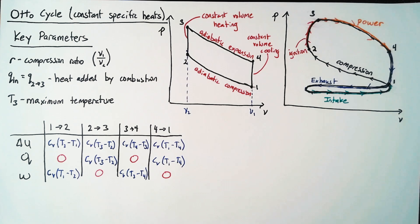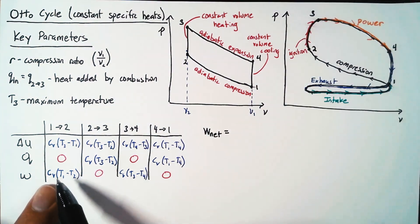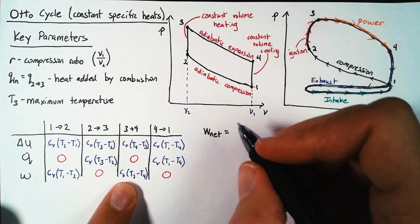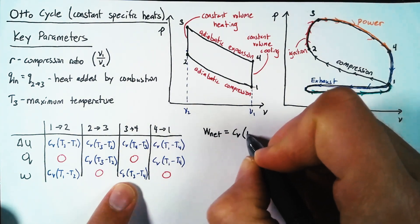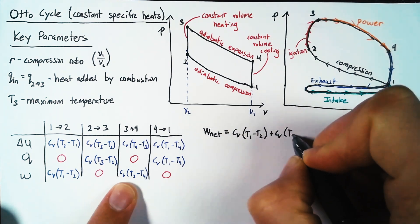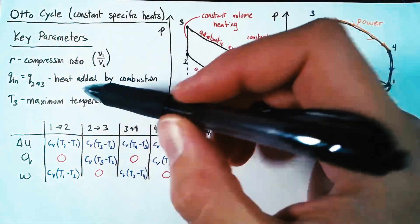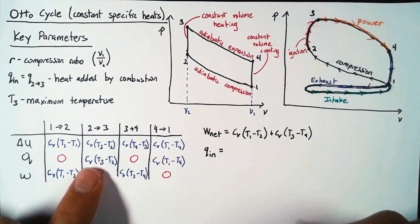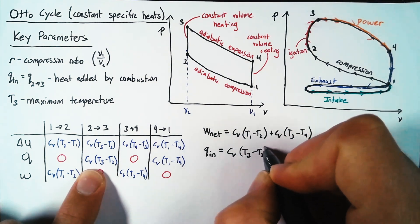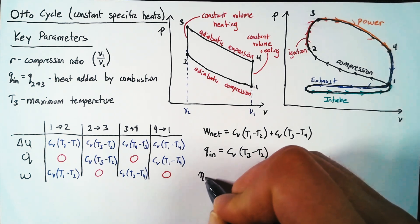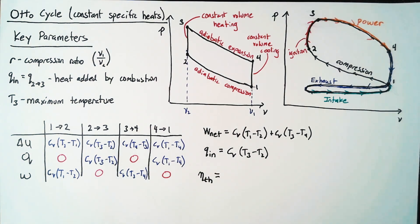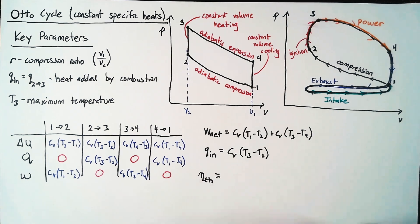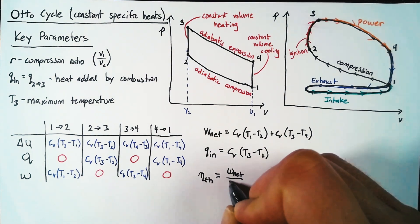To determine engine efficiency, we look at the net work, which equals the work done in process one to two plus the work done in three to four: W_net = CV(T1 − T2) + CV(T3 − T4). We also care about Qn — the energy we're spending to make the engine work — which is CV(T3 − T2). The thermal efficiency tells us what percentage of the heat from combustion is actually producing useful work, and it's simply W_net divided by Qn.